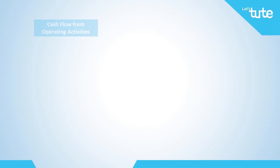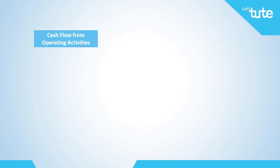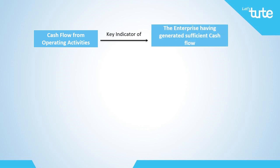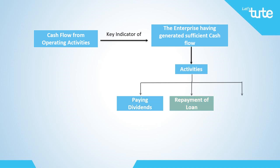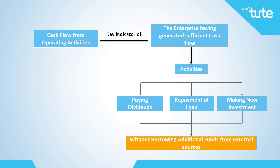The amount of cash flow arising from operating activities is a key indicator of the extent to which the operations of the enterprise have generated sufficient cash flows to manage activities like paying dividends, repayment of loans, making new investments, etc., without borrowing additional funds from external sources.